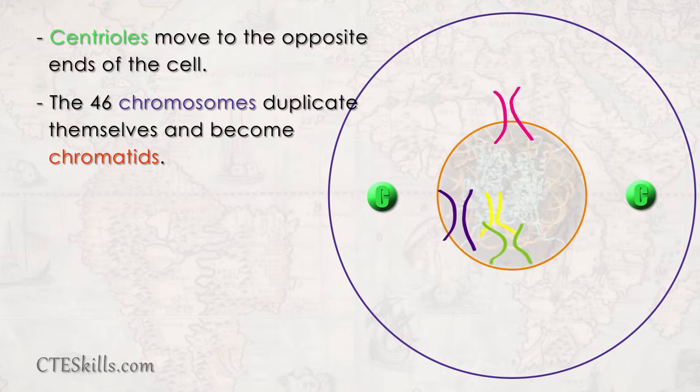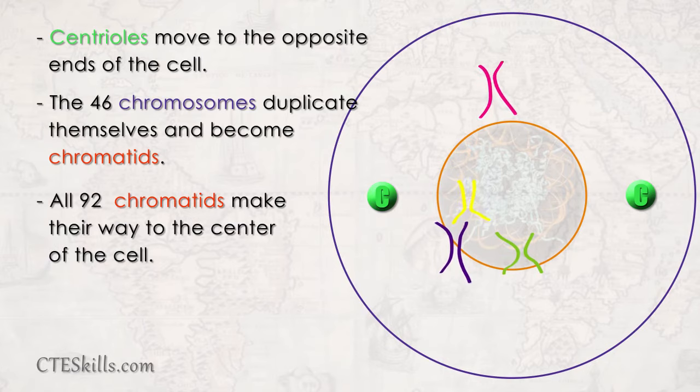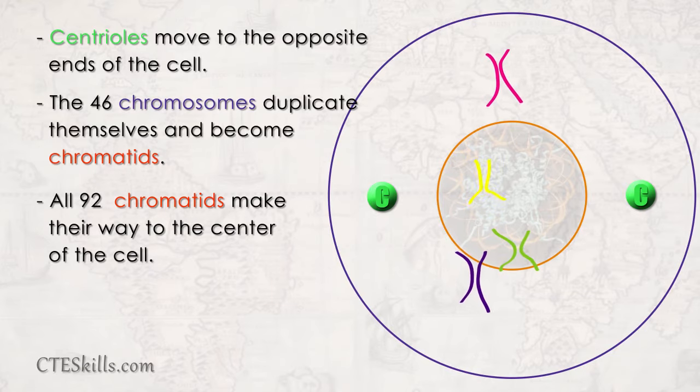If everything goes well, the 46 chromosomes will clone themselves and change their stage name to chromatids. Unlike the centrioles, the chromatids, now all 92 of them, will find their way to the center stage of the cell to put on a performance.